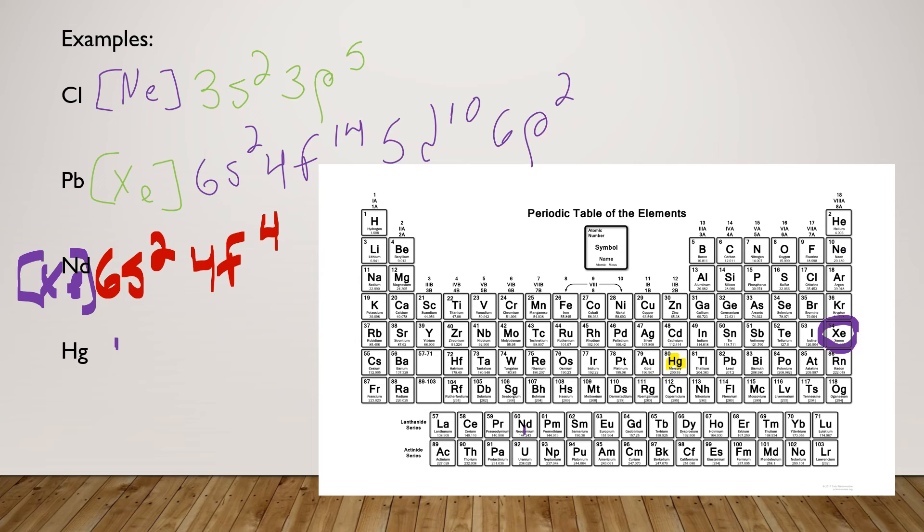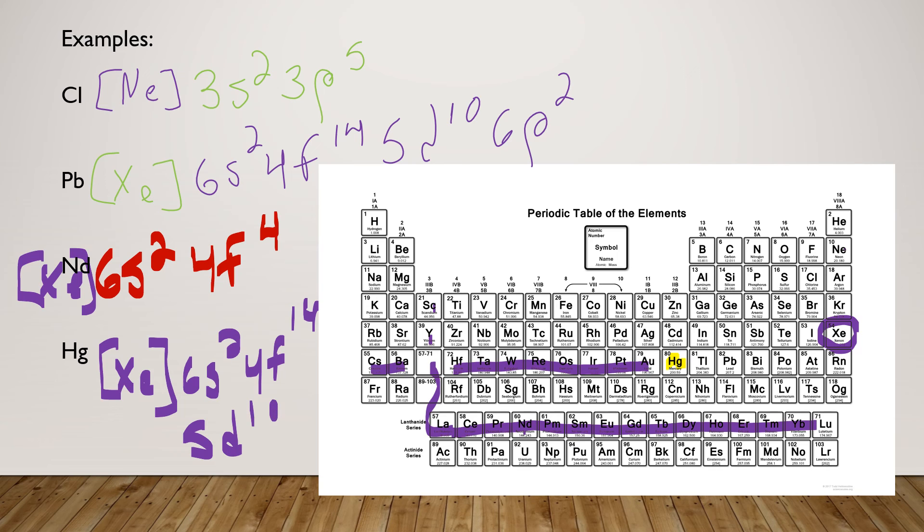So back to mercury, we've got xenon. Then after xenon, we're going to go to 6s2. We're going to come on down and go through 4f all the way through 14. And then we're going to go back up and go through the d-block here, and we're going to end up on 5d10.